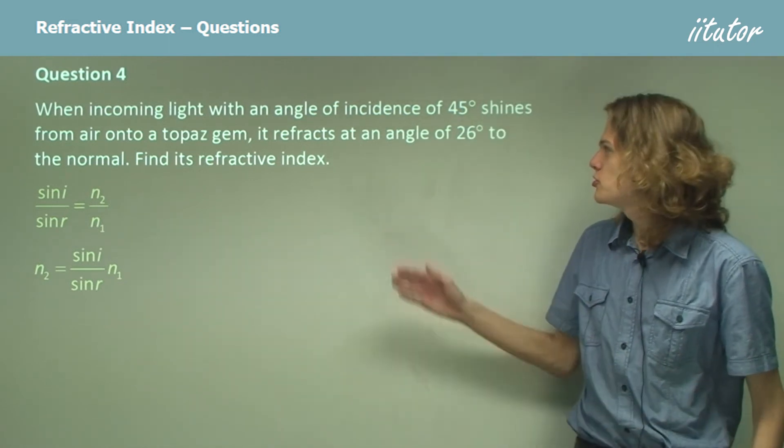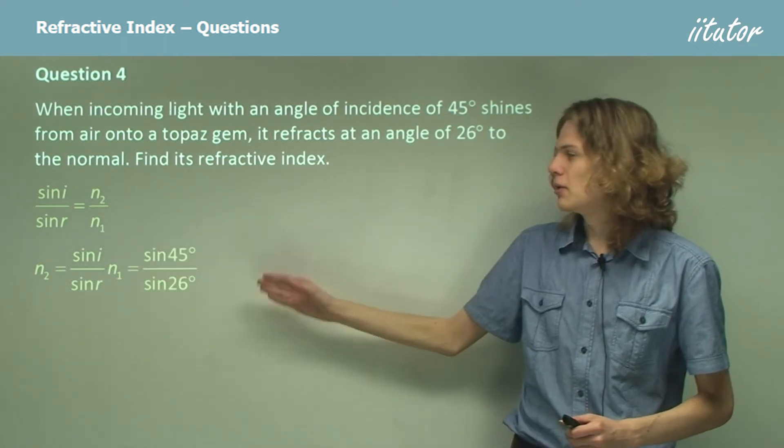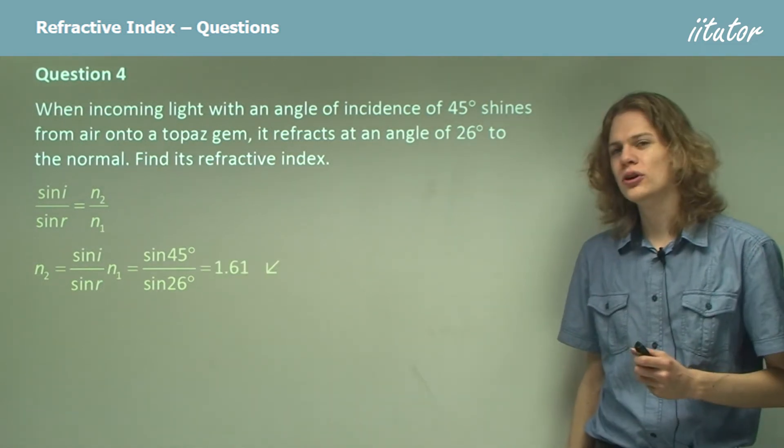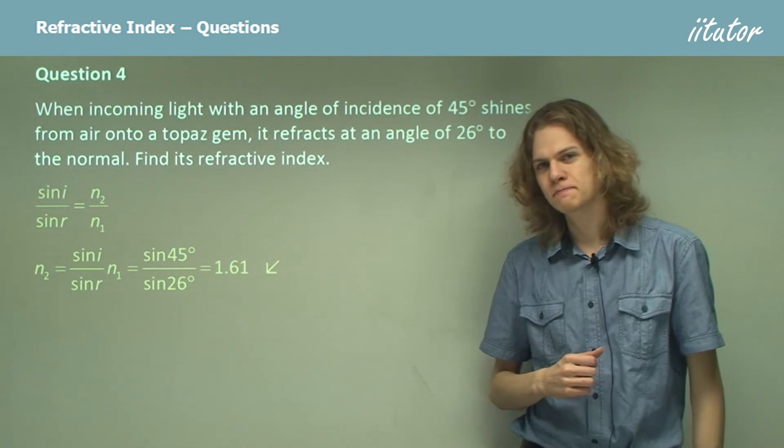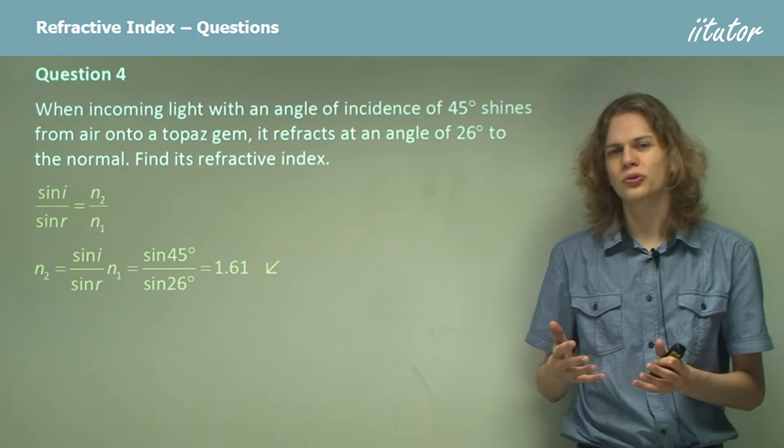Now, taking this equation, we substitute in our values of 45 degrees and 26 degrees, and we multiply by N1, the refractive index of air is about 1, and this evaluates to 1.61. So this is the refractive index of a topaz. You can see that this is much higher than that of water or glycerol.